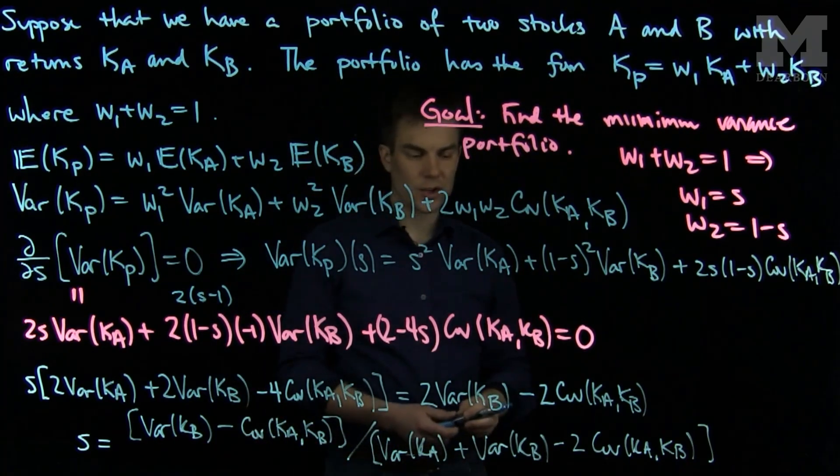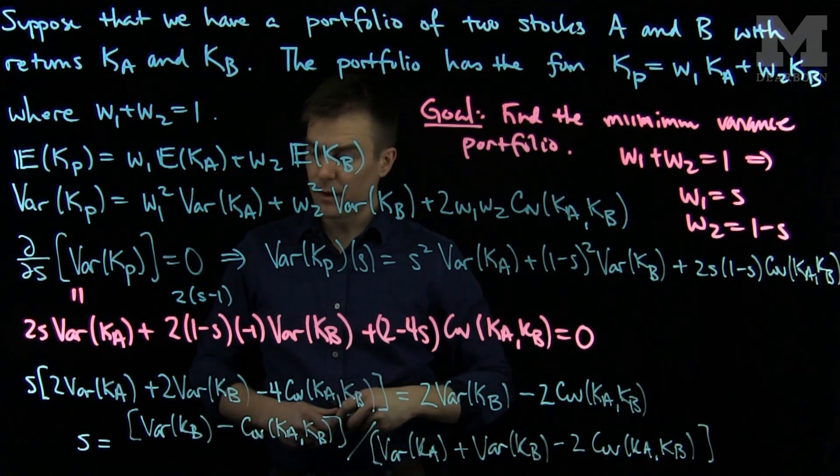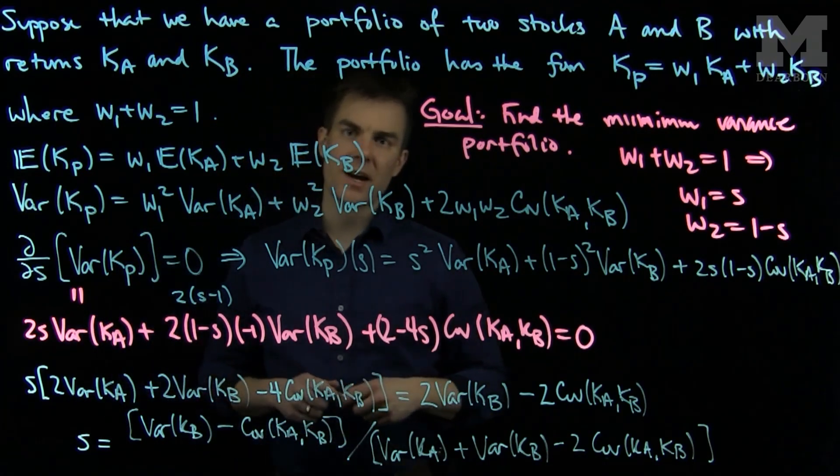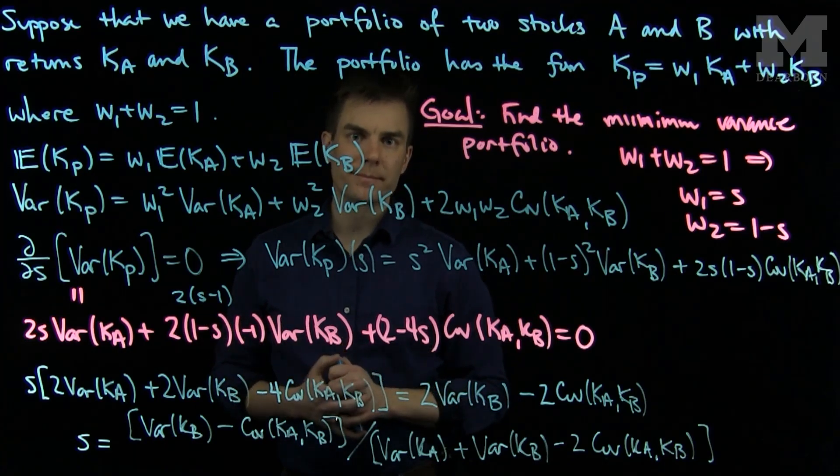So this expression over here, this value of S, gives us the weighting of the minimal variance portfolio. So S is the proportion that you should invest in stock A in order to minimize the risk of the portfolio. Thank you very much.